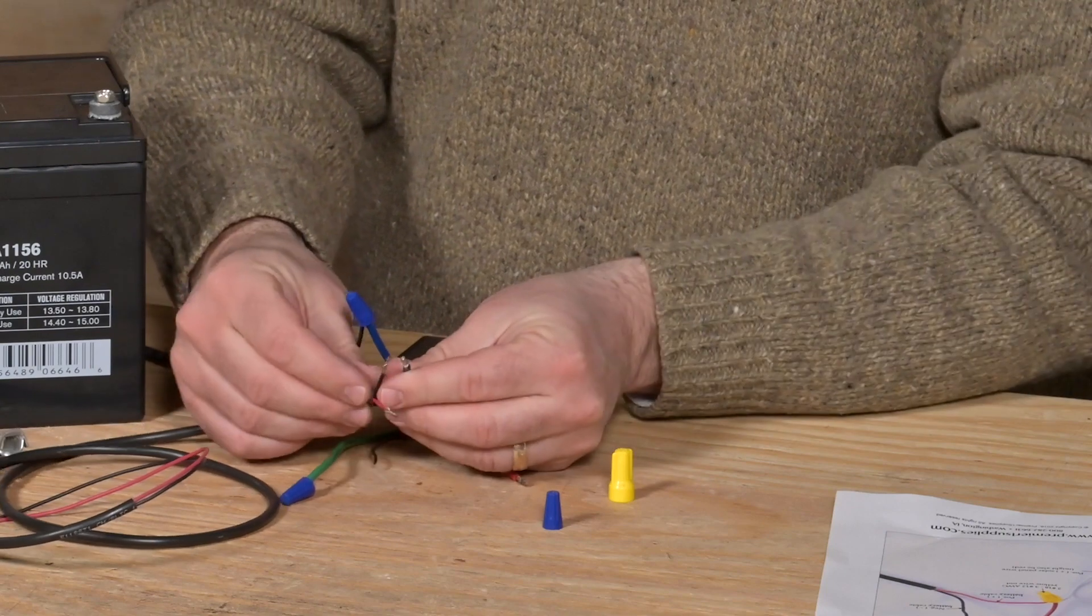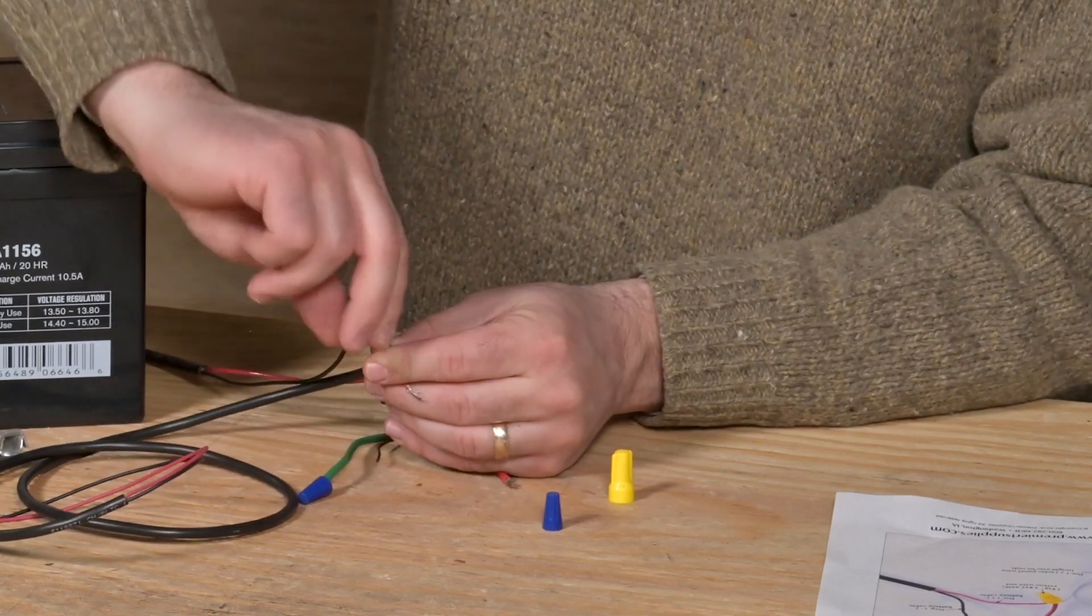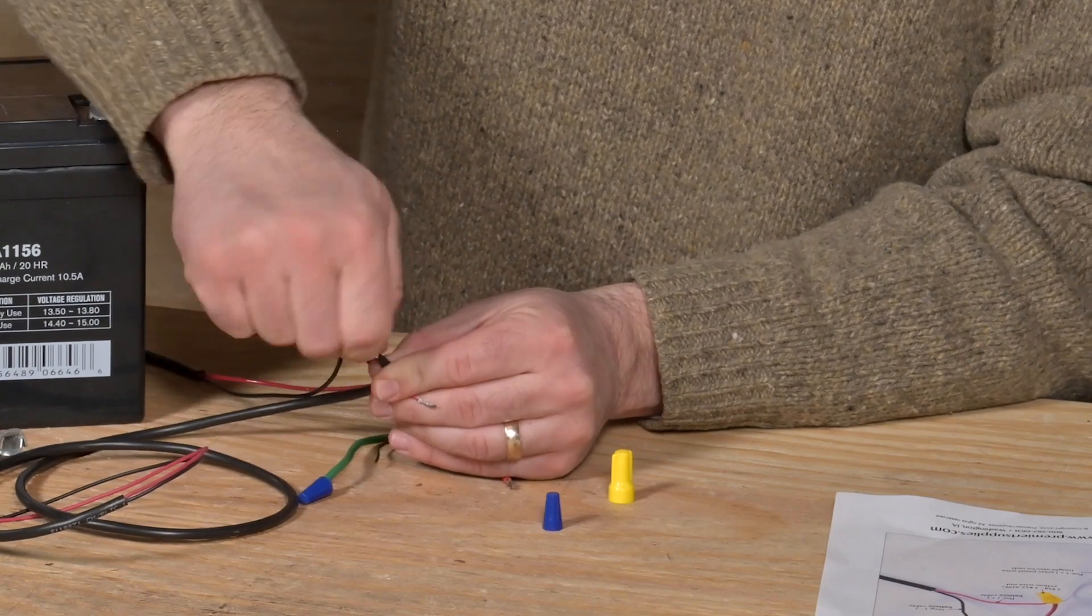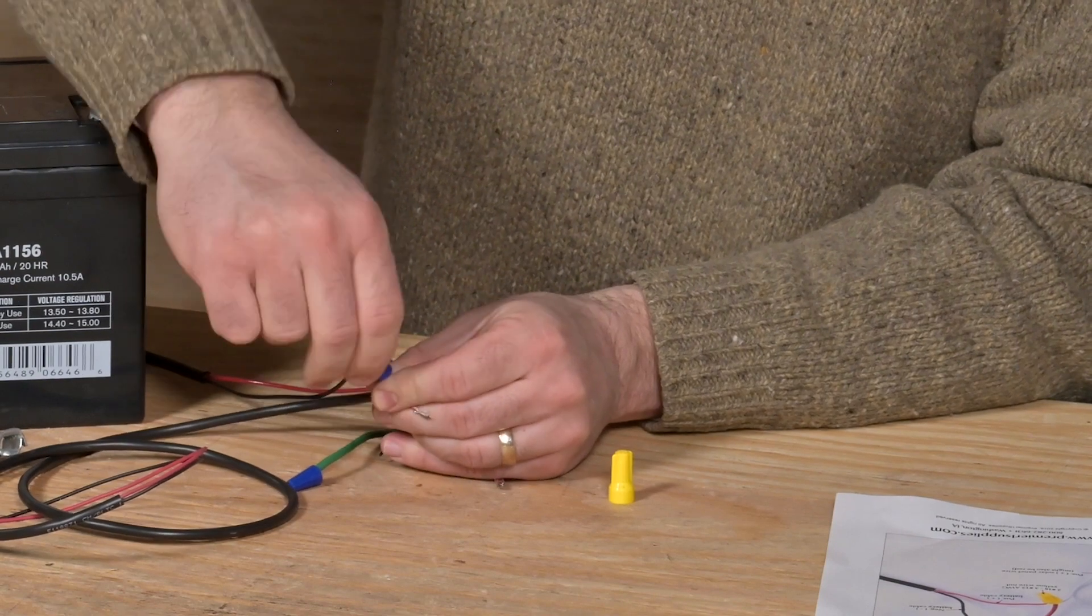So I'll take my negatives - negative from the regulator to negative from the battery setup. Do a slight twist on those and put on my cap.